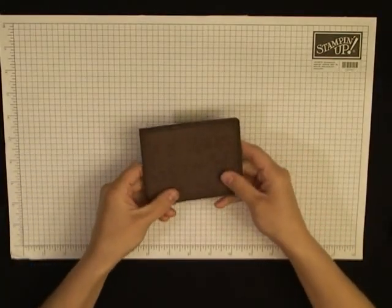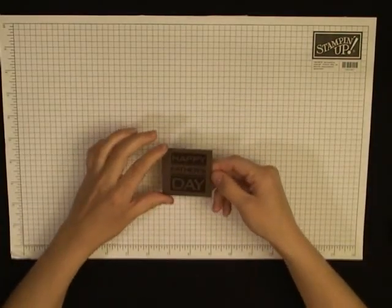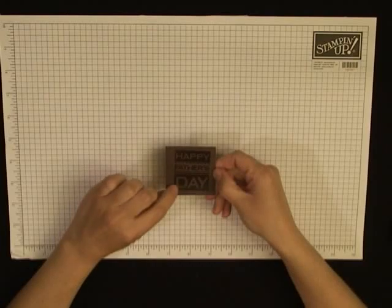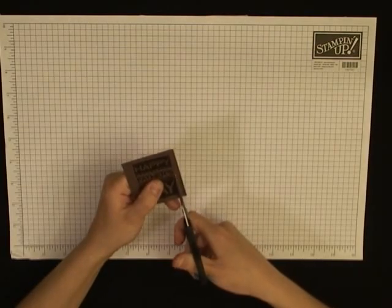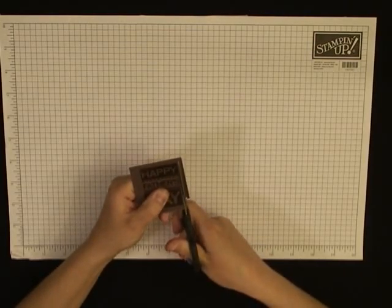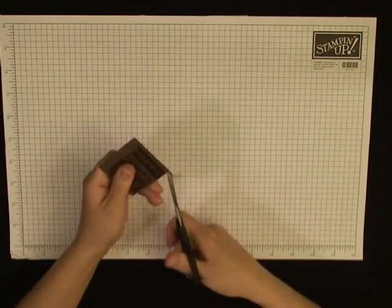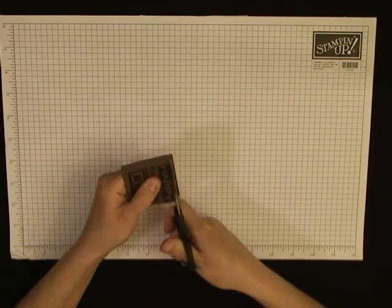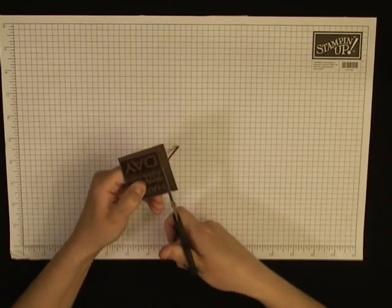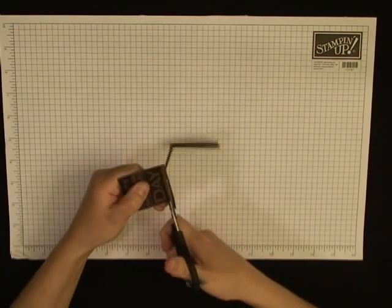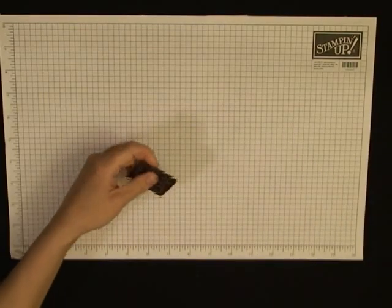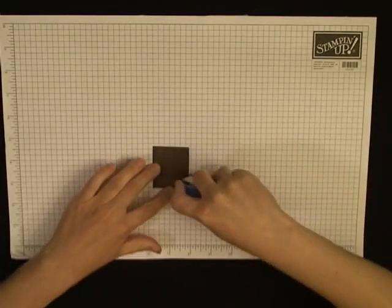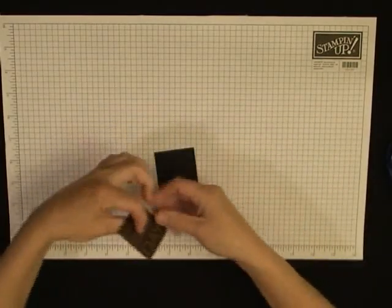Now we need to finish it with the Happy Father's Day. I've stamped the Happy Father's Day on the scrap piece of chocolate chip card stock. I've stamped it in VersaMark and then heat embossed it with clear embossing powder. Take some scissors and trim around the edges, probably a little bit less than an eighth of an inch. Add some adhesive to the back.